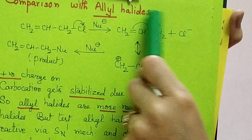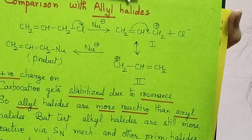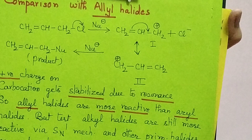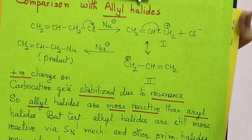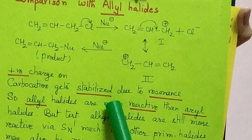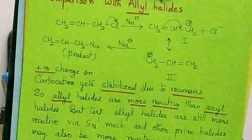The allyl carbocation is resonance stabilized: the double bond shifts and the positive charge gets delocalized onto the other carbon, giving two resonance structures. The nucleophile then attaches to yield the product. Positive charge stabilization via resonance makes it easier for the carbocation to form — its activation energy decreases — so allyl halides are quite reactive towards nucleophilic substitution reactions.